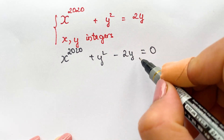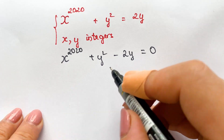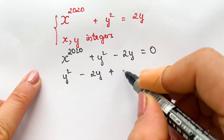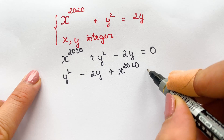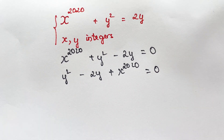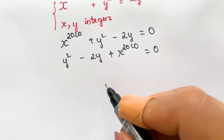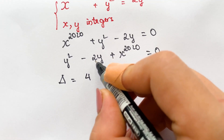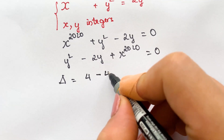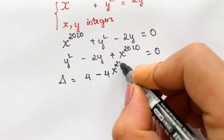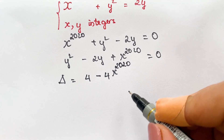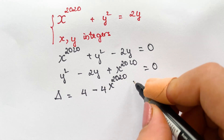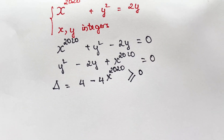Is the equation a quadratic in terms of y? Therefore you can have y squared minus 2y plus x^2020 equals zero. The discriminant is b squared minus 4ac, which is 4 minus 4 times x^2020. Because we need to find real solutions, the discriminant has to be greater than or equal to zero.